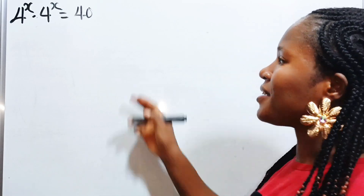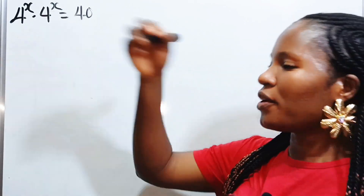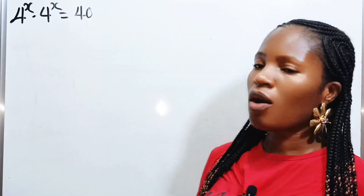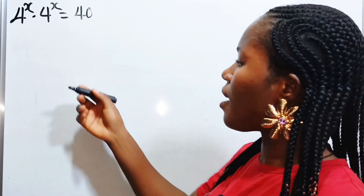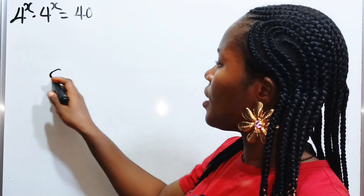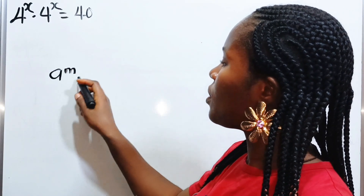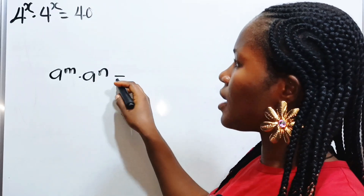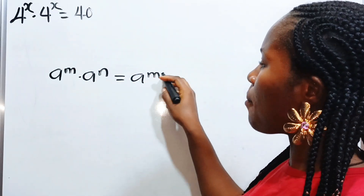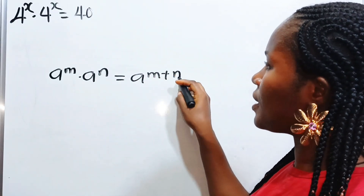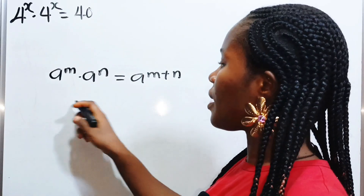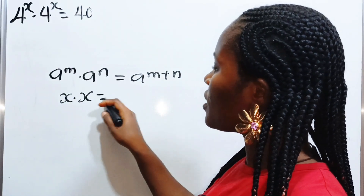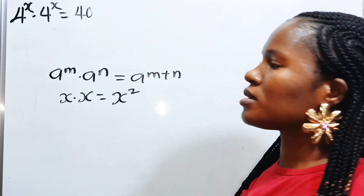Welcome back to my channel. Let's solve for the value of x. First, I want you to note that when you have a to the power of m multiplied by a to the power of n, that is equal to a to the power of m plus n. Or similarly, x multiplied by itself is equal to x squared.